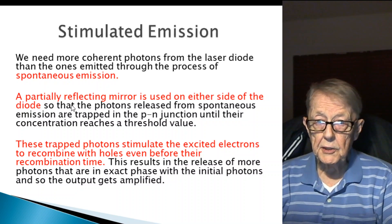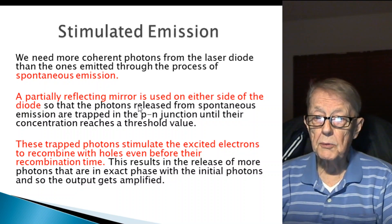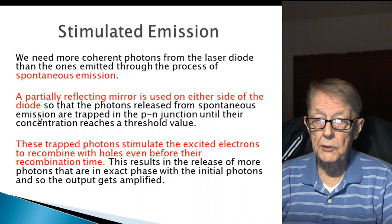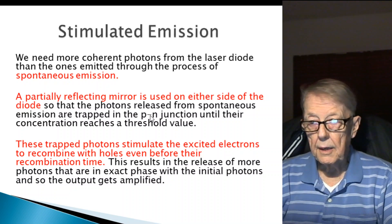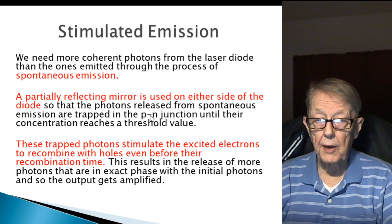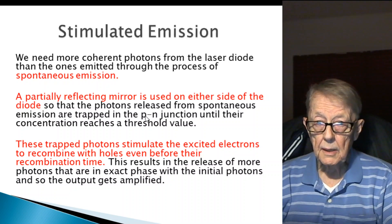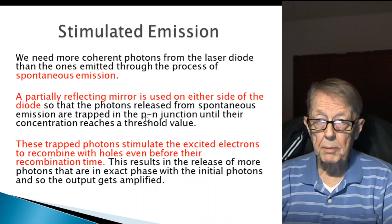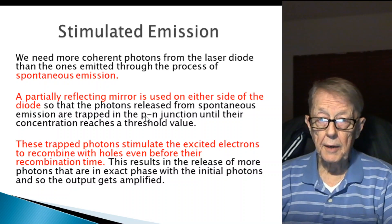And this is done, they say, so that the photons released from spontaneous emission are trapped in the p-n junction. This just adds to my confusion a bit about what they're trying to say here. How can you trap a photon, a light photon?